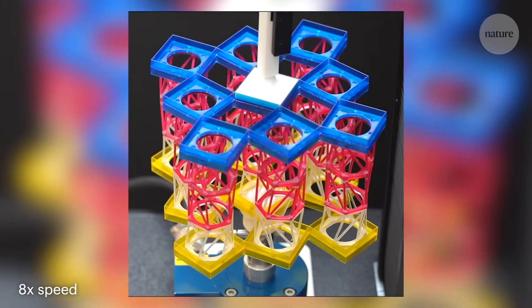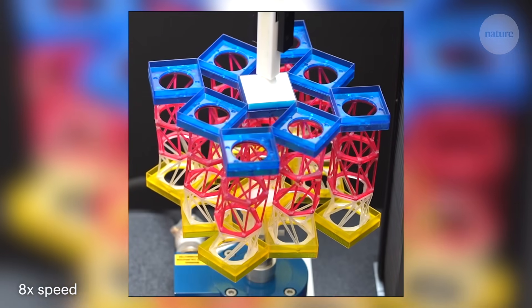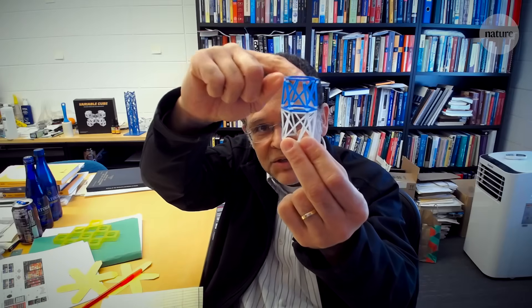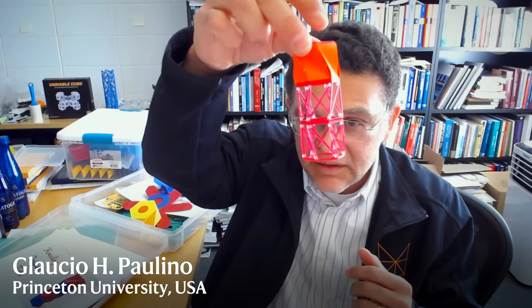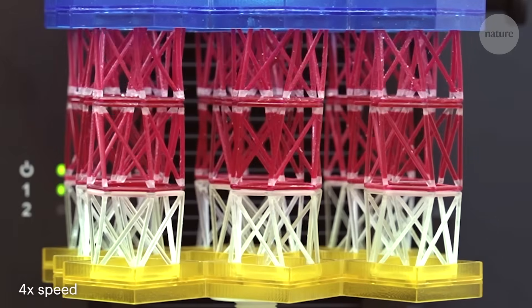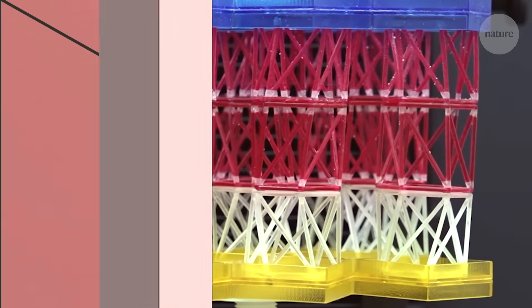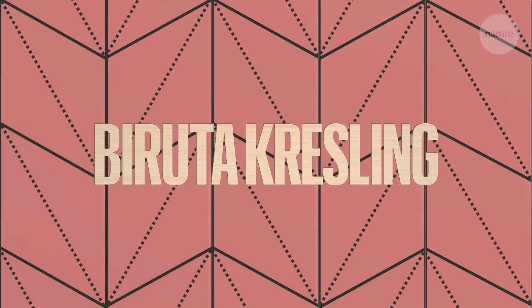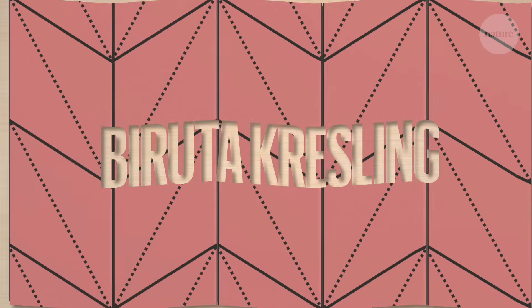Mechanical metamaterials are structures carefully designed to give rise to unique or unusual physical properties. Here is an assembly system that is made of the Kresling towers, a tower like this. These modules were inspired by the Kresling origami pattern, named after Baruta Kresling, an architect and researcher into foldable structures.